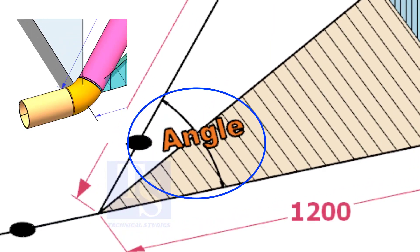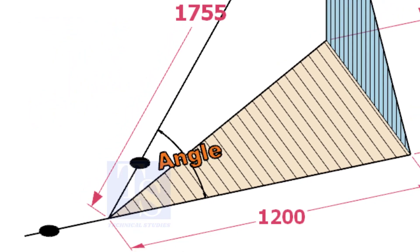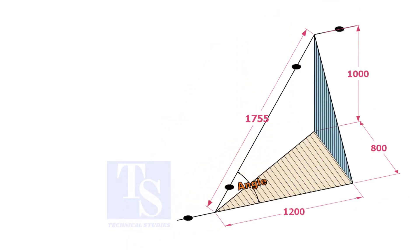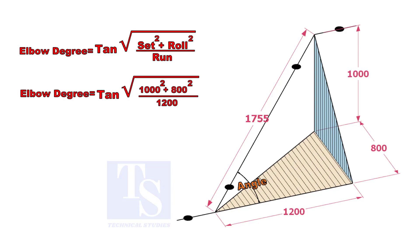Let us calculate the degree of the elbow or the including angle. The formula is the square root of set squared plus roll squared, divided by run, tan inverse.